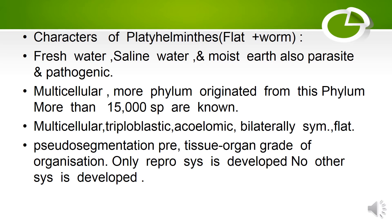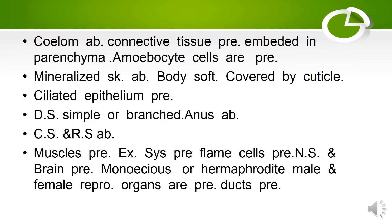More than 15,000 species are known. These are multicellular, triploblastic, acoelomate, bilaterally symmetrical and flat animals. Pseudo-segmentation is present. Tissue organ grade of organization is present. Only the reproductive system is developed.